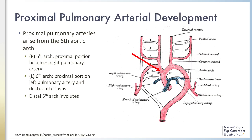Normal growth and development of the pulmonary circulation is critical for achieving successful transition to postnatal life. Growth factors such as VEGF and fibroblast growth factor appear to be responsible for normal morphogenesis of these vessels. Timing of pulmonary arterial development occurs in parallel and mirrors airway development.